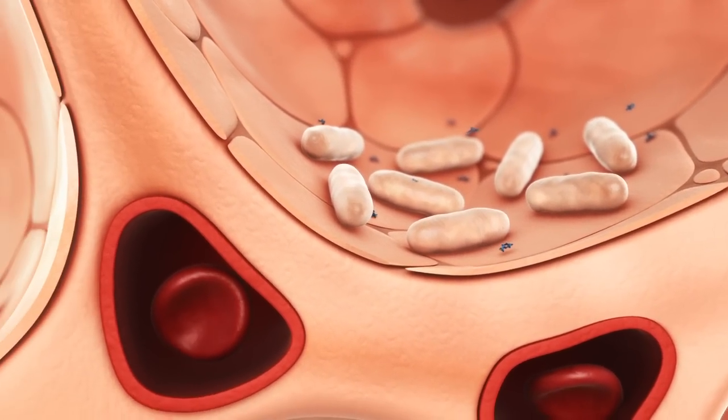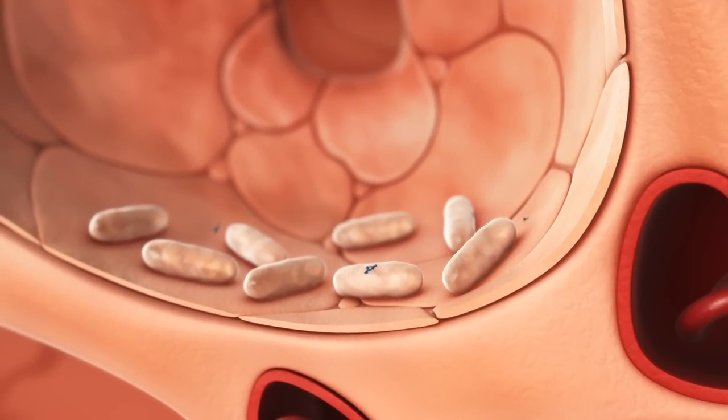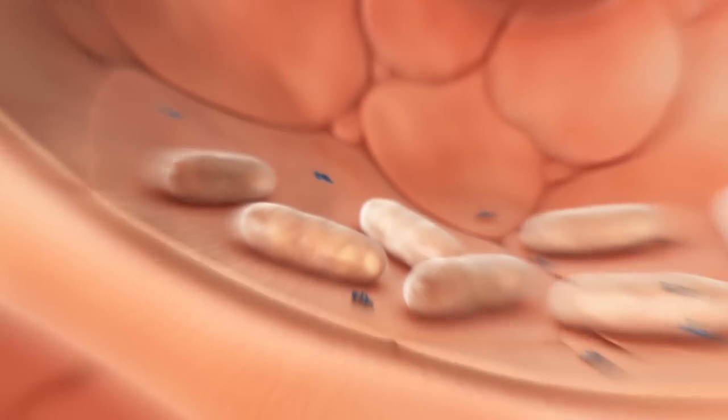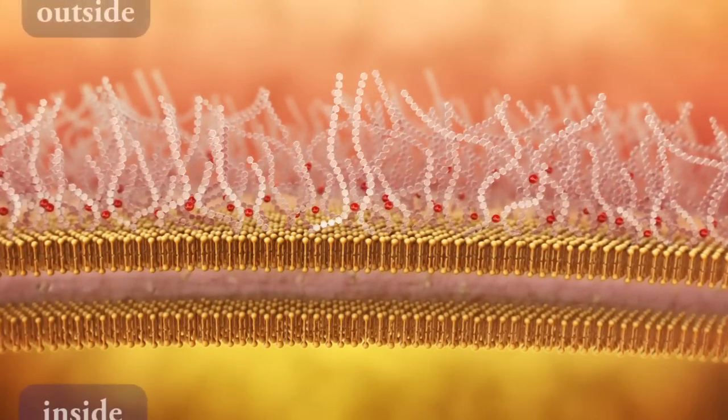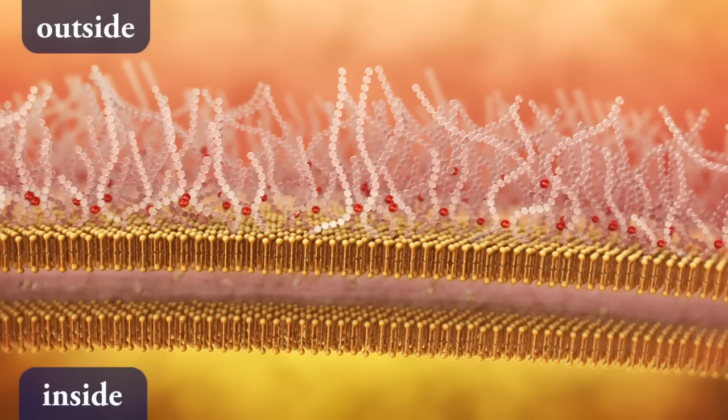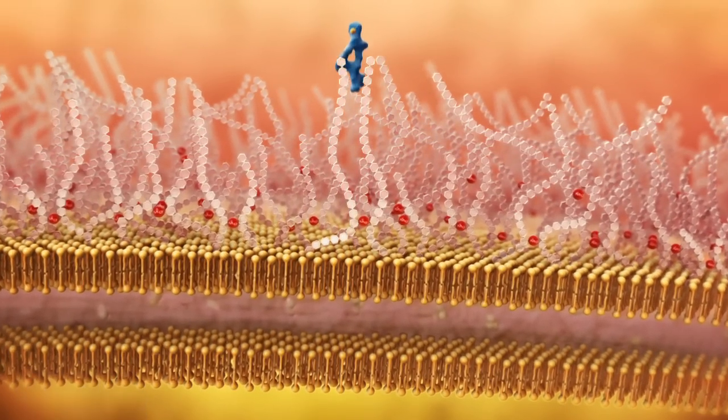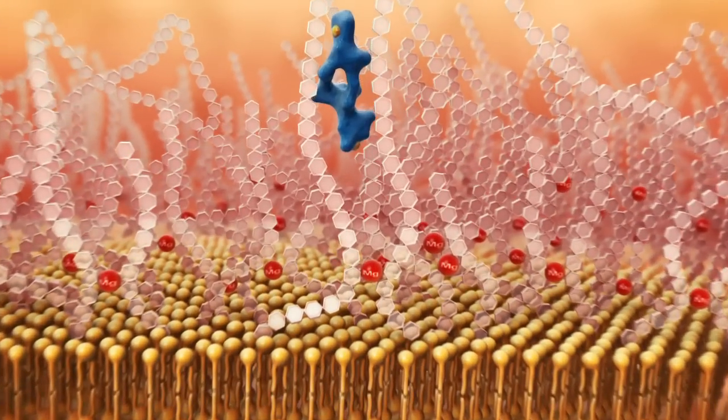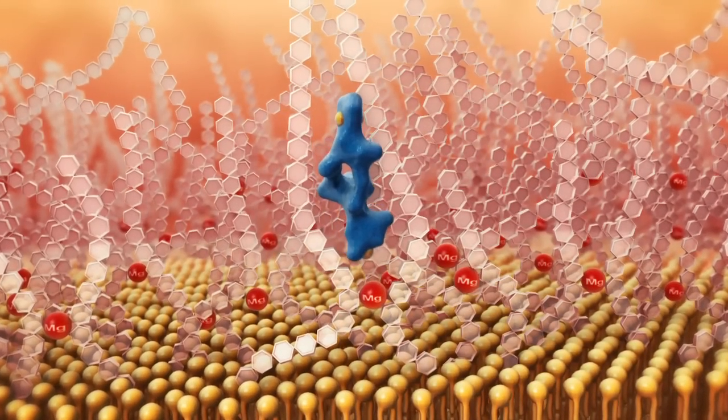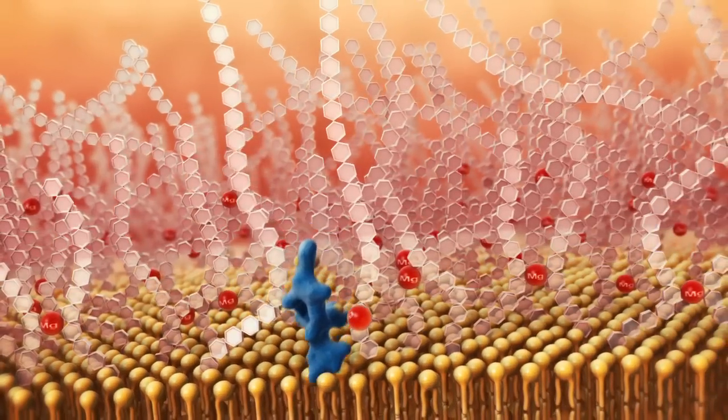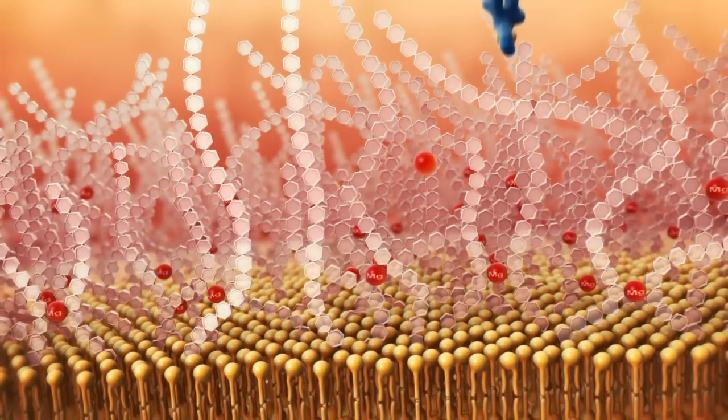It is believed that Tildipirosin's chemical structure also facilitates penetration of the bacterial cell wall. Macrolides with either two or three amine groups, such as Tildipirosin, are described as weakening the permeability barrier of bacterial cell walls by displacing the stabilizing magnesium ions of the lipopolysaccharides on the surface of the bacterium, thus loosening this outer barrier.